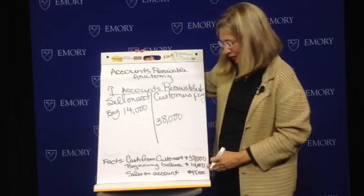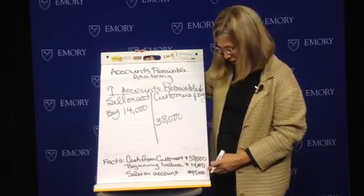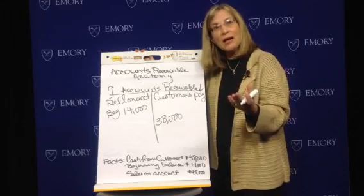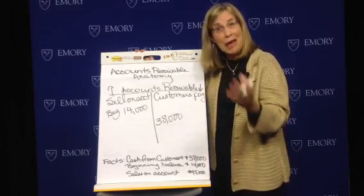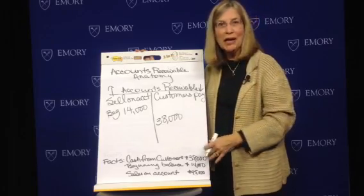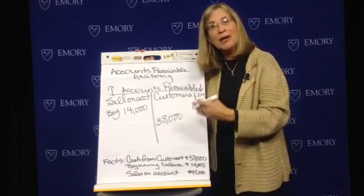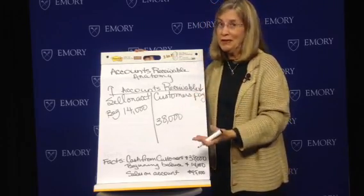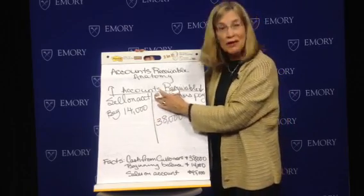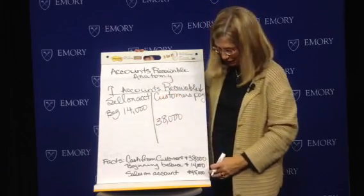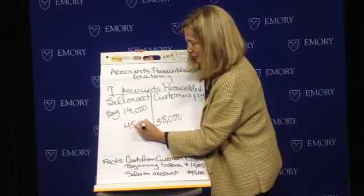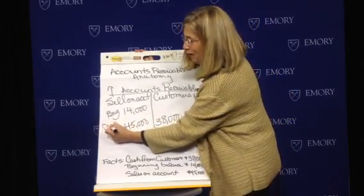It also says that sales on account are $45,000. We know that when we sell on account, that's when we debit accounts receivable because the customer says, "Just bill me later." And we credit sales, or revenue, or fees earned. So accounts receivable goes up when we sell on account, and remember that that's $45,000. Sometimes we call this credit sales.